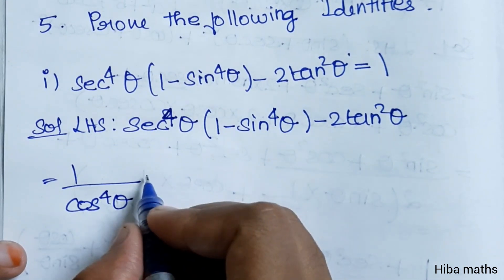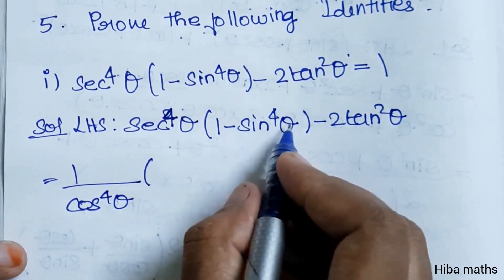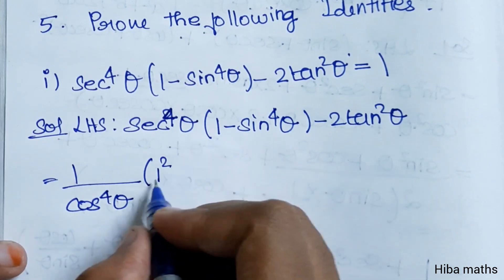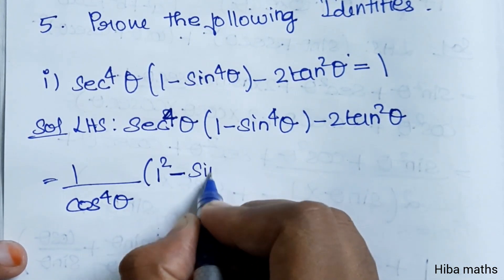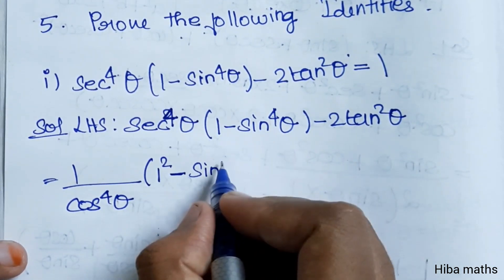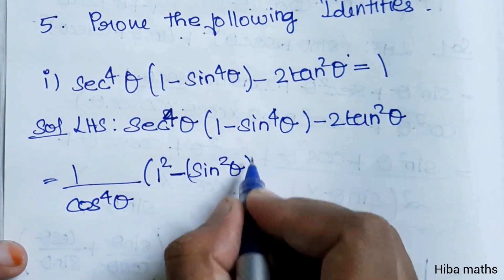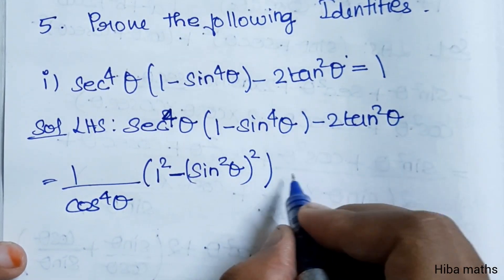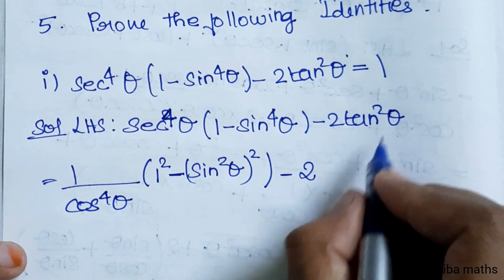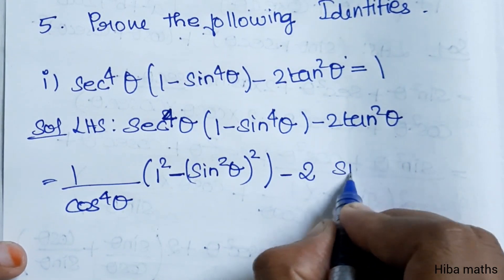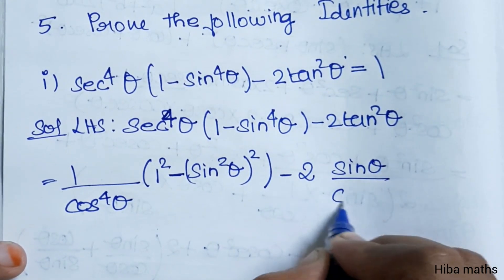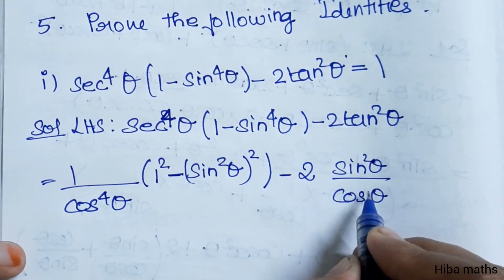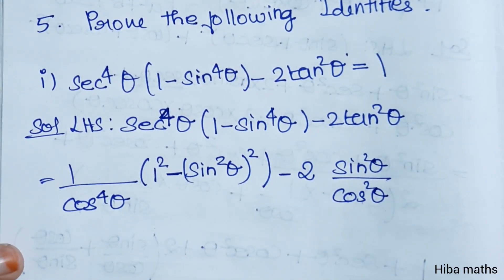Changing the bracket: 1 is equal to 1 squared, sin⁴θ is (sin²θ) whole squared, and 2tan²θ where tan θ equals sin θ by cos θ, so tan²θ equals sin²θ by cos²θ.